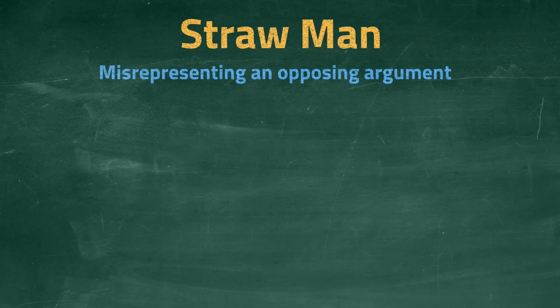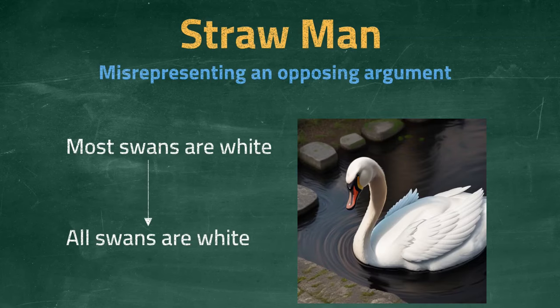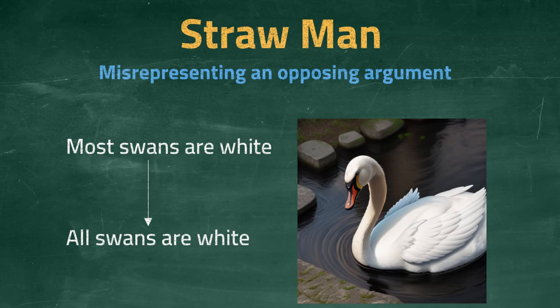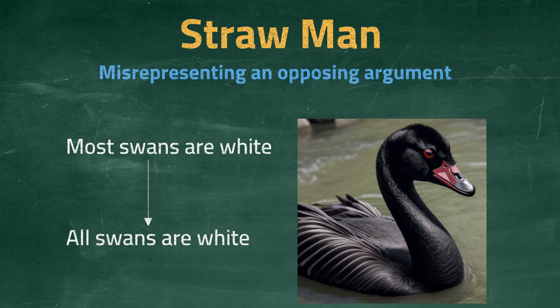One way to straw man an argument is to make it more extreme. For example, if the argument was 'most swans are white,' this could be straw manned into 'all swans are white.' By changing 'most swans' to 'all swans,' the argument has become more extreme and easier to disprove. 'All swans are white' requires only one example of a non-white swan to disprove it. However, to disprove the original argument requires much more work.